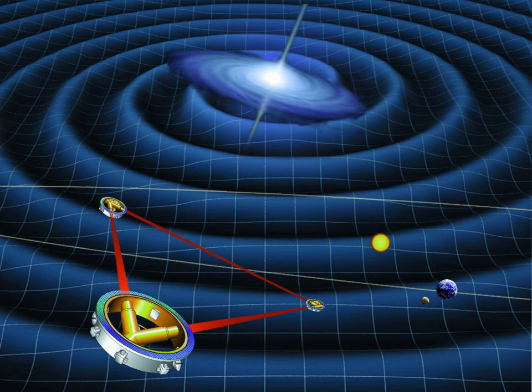The LISA mission's primary objective is to detect and measure gravitational waves produced by compact binary systems and mergers of supermassive black holes. LISA will observe gravitational waves by measuring differential changes in the length of its arms as sensed by laser interferometry.